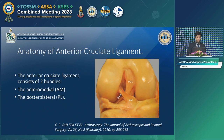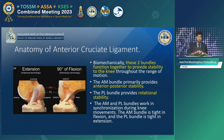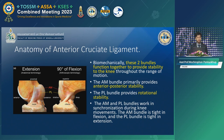The anatomy of the ACL consists of two bundles: the AM bundle and PL bundle. These two bundles work together to provide stability of the knee throughout the range of motion. The AM bundle is mainly tight through the full range of motion, providing anteroposterior stability, and the PL bundle provides rotational stability.